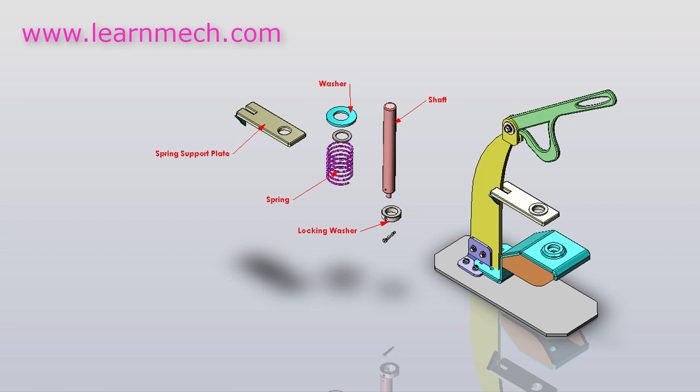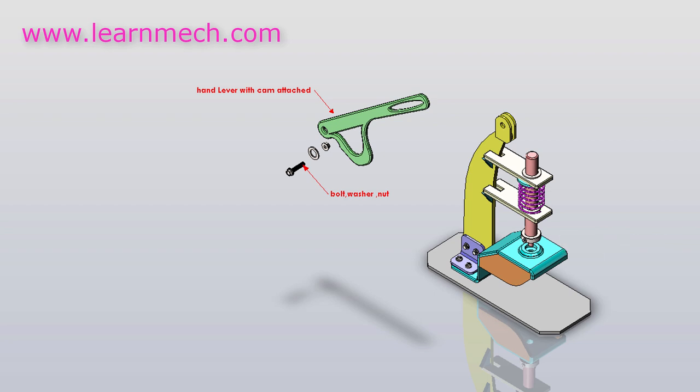The spring is supported in between two plates which helps to move the lever upwards. The shaft is placed in between the springs and spring supporting plates.